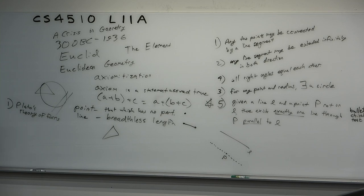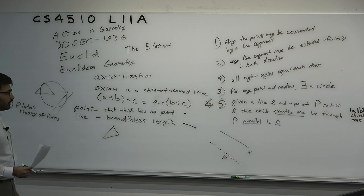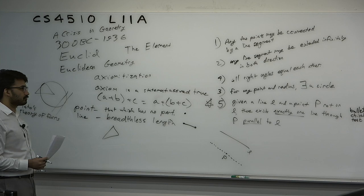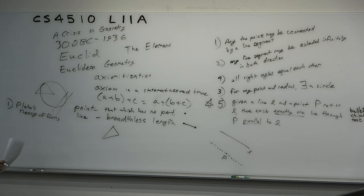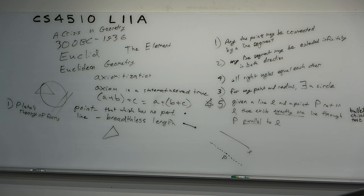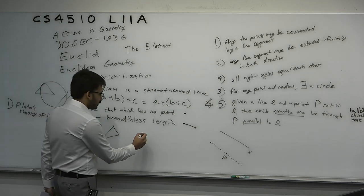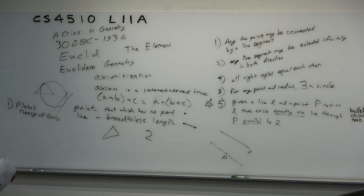Euclidean geometry is all ideal — it's about imaginary dots, lines, and points, and in some sense it may accidentally help you build a house. You could derive the Pythagorean theorem and use it to cut the right length of wood. But the geometry itself is just made up for the fun of it. This connects to Plato's theory of forms: a triangle is not a real object but a concept, an ideal. Concepts themselves exist in a way that is prior to the material objects that instantiate them.